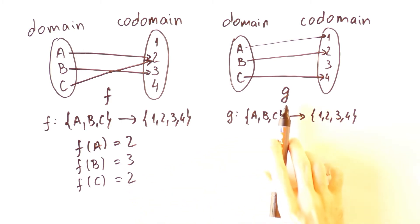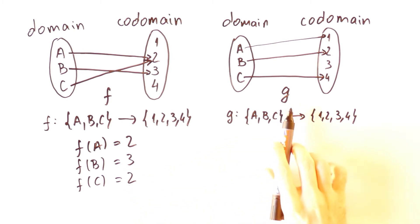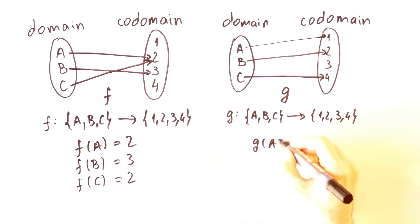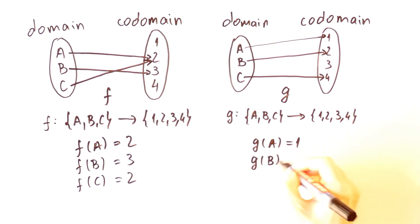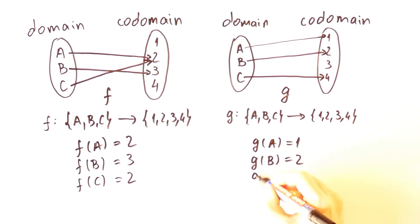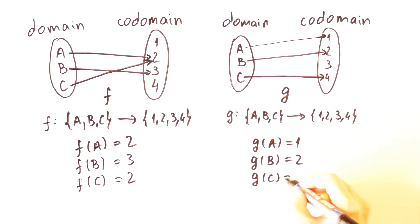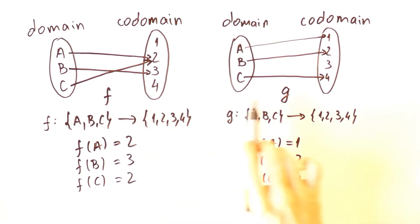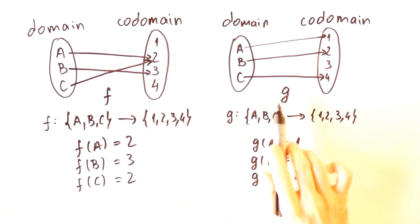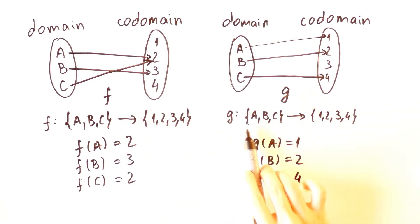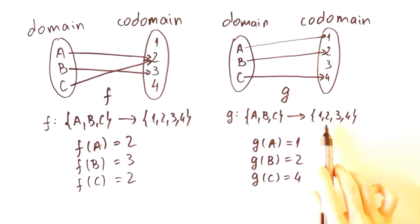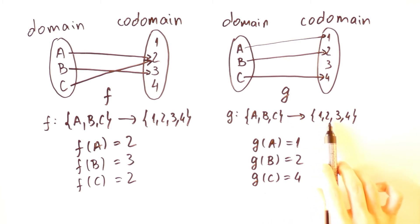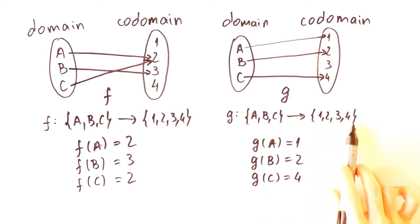And similarly for g. For both f and g, the domain is the set of A, B and C, while the codomain is the set of 1, 2, 3 and 4. But domains and codomains can be other sets.